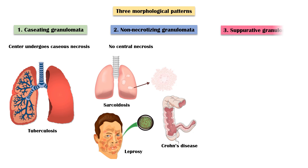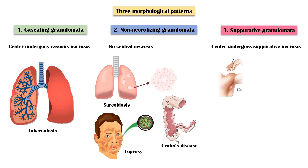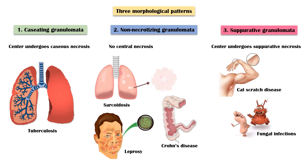Finally, in suppurative granulomata, the center undergoes suppurative necrosis. This type of granuloma is seen in cat scratch disease, fungal infections, and rarely in tuberculosis.